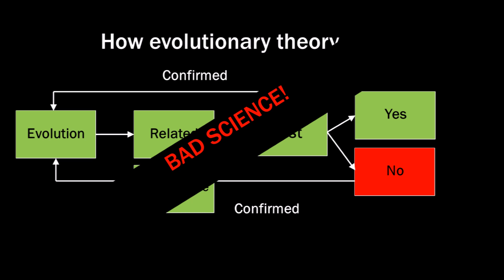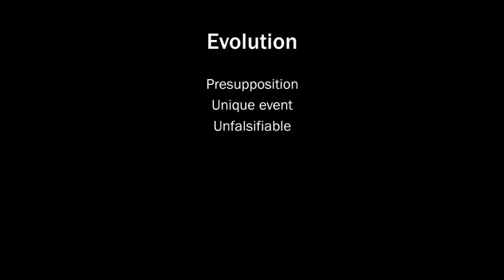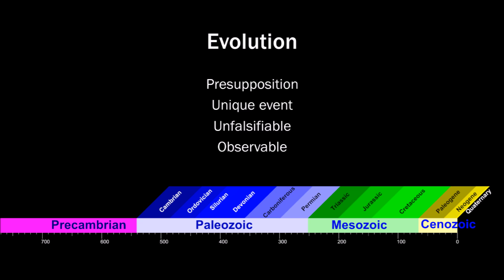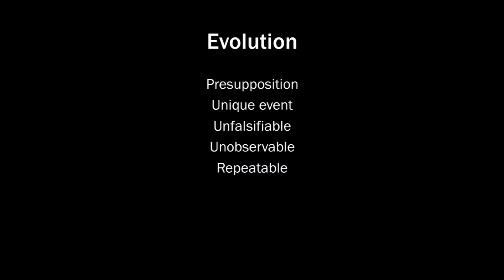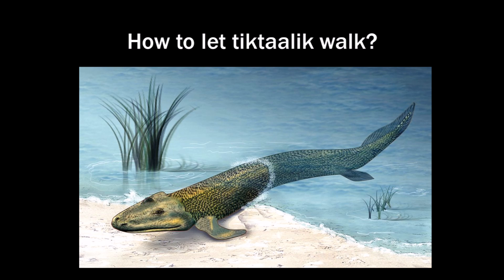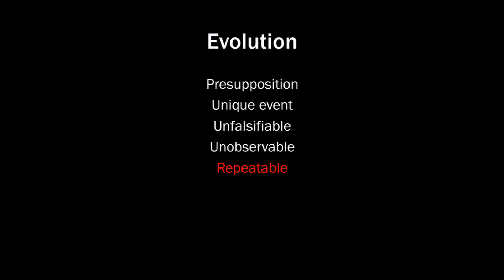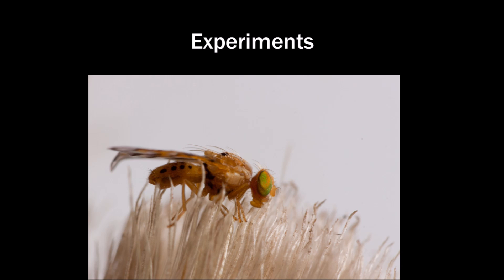When all paths lead to the confirmation of the theory, the theory is unfalsifiable. Is evolution observable? Only evolution that happens today — the majority were unique events that supposedly happened millions of years ago over millions of years; we absolutely cannot observe that. Is it repeatable? Have we evolved a trilobite in the laboratory? Can we make Tiktaalik walk? Can we give a dinosaur feathers? Can we evolve cows into whales? We can't. It isn't repeatable. Experiments show fruit flies evolve into fruit flies, no matter what we expose them to.